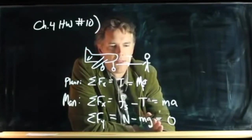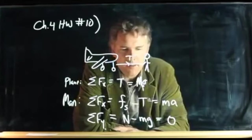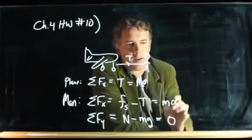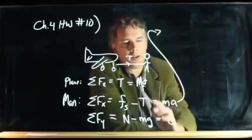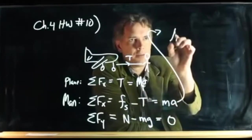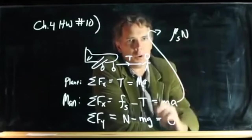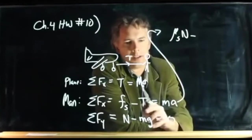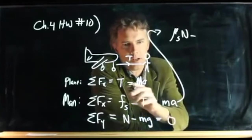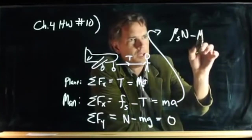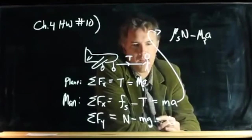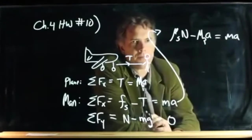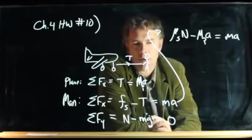At this point we should be able to put this stuff together and solve it. We have this equation: the friction force Fs equals mu_s times the normal force of the man, minus tension. But we know what tension is from the first equation — it's M of the plane times A. Both of those add up to MA.